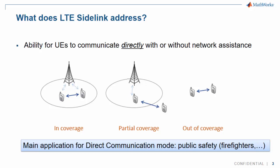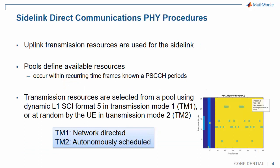The main application for the direct communications mode of Sidelink is Public Safety, where one firefighter can talk to a group of other firefighters. Sidelink uses LTE uplink resources and sets up pools, which define resources available for transmission. Resources can be selected by the network — that is, network-directed — or autonomously.